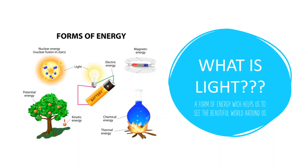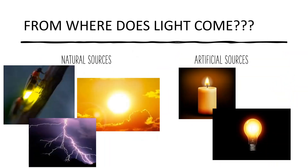What is light? It's just a form of energy. There are many forms of energy in this universe: nuclear energy, magnetic energy, chemical energy, thermal energy, potential energy, kinetic energy, electrical energy — and we are talking about light energy. Light energy helps us to see the beautiful, colorful world around us. That is the use of light.